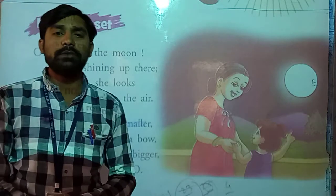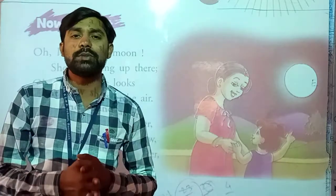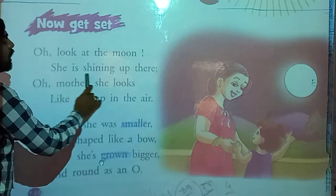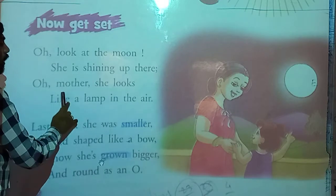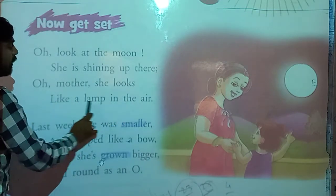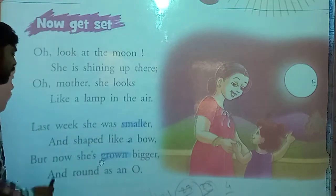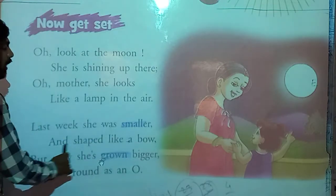I am reading this poem — you can also read it with me by looking at your mobile screen, or you can see in your books also. Oh! Look at the moon, she is shining up there. Oh! Mother! She looks like a lamb in the air. Last week she was smaller and shaped like a lamb.